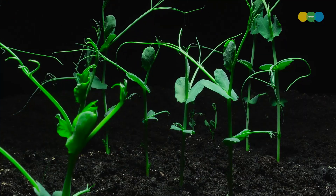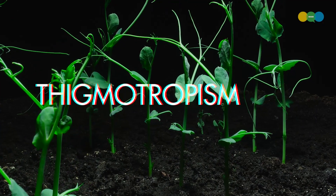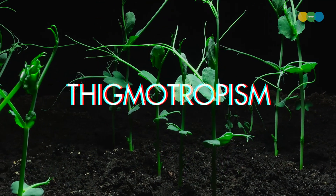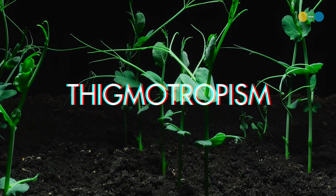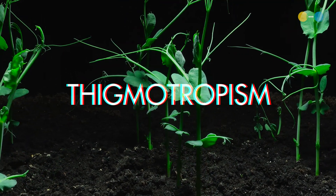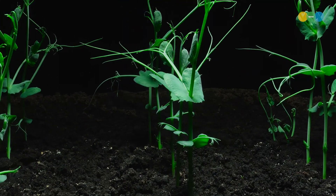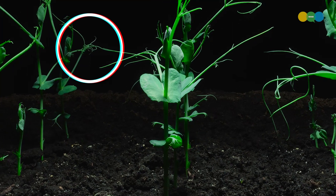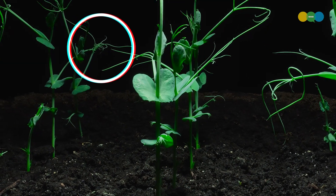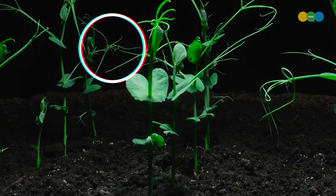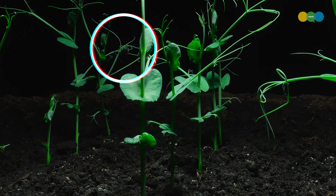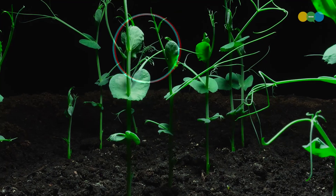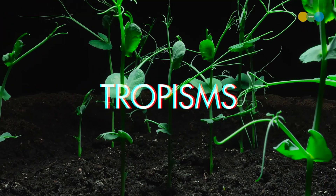What do these peas do? You're seeing thigmotropism with the peas. That's movement or growth in response to touch. These little buggers are looking for something to touch, something to grab onto. And when they find it, they'll stop moving and put that energy into growing. Tropisms.